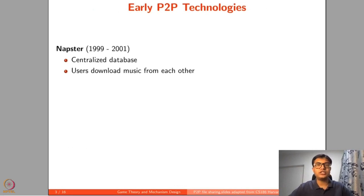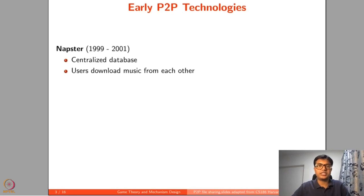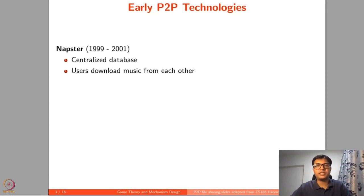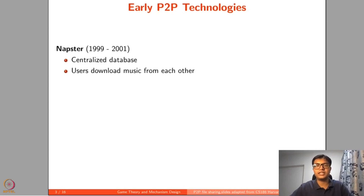Let us look at the historical development of peer-to-peer technologies. The first was Napster, which came about in 1999 and closed down two years later. It had a centralized database tracking all files, and users could download music from each other. Whenever a user wanted to find music, they contacted other users who had it and downloaded directly. The reason for closing down was primarily because some music was copyrighted, resulting in violations in terms of peer-to-peer file sharing.